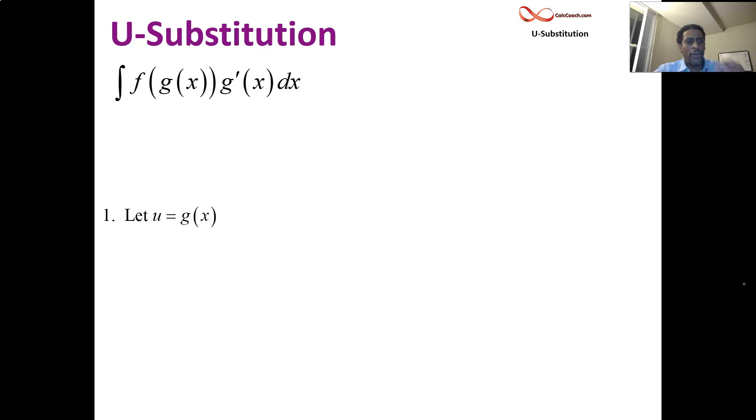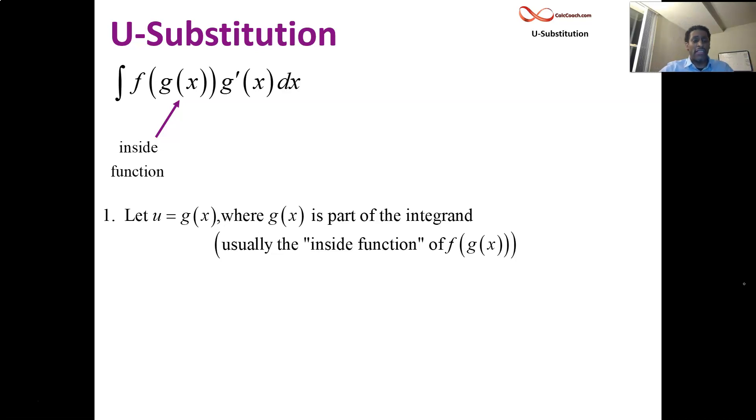How does this process work? Well, what you do in your first step is you let u equal g of x. g of x is the part of the integrand. Usually, it's the inside function there, the function that is basically part of another function. After identifying what that should be, then the next step you should do is take its derivative. Taking the derivative of u equals g of x, that statement in step one, you get du dx is g prime of x.